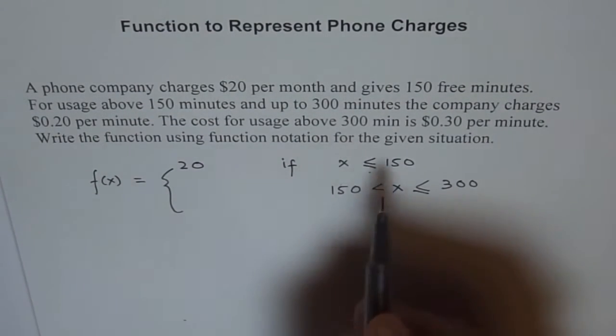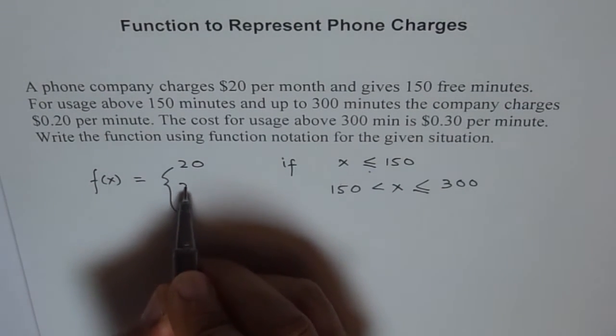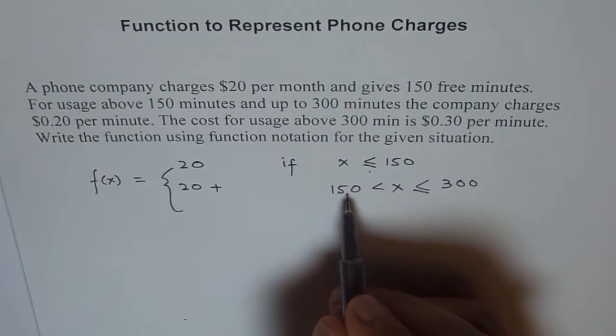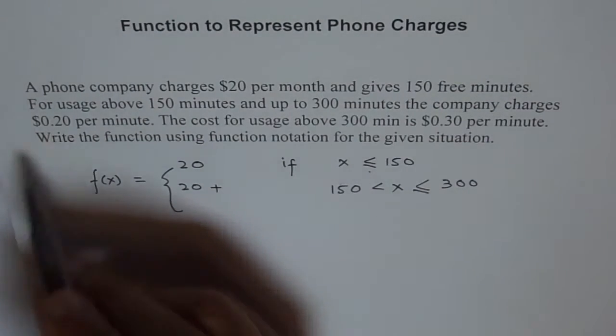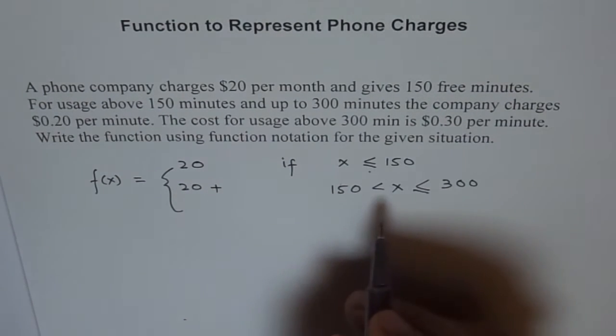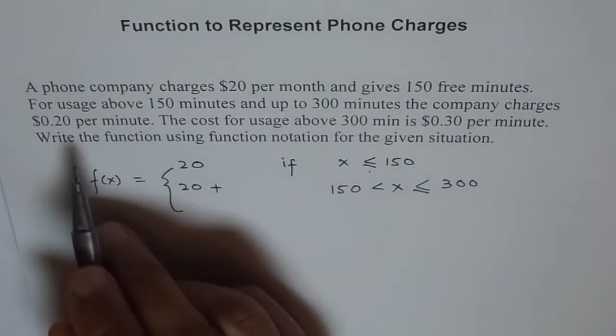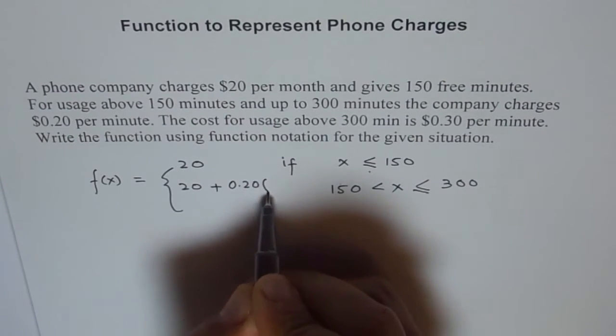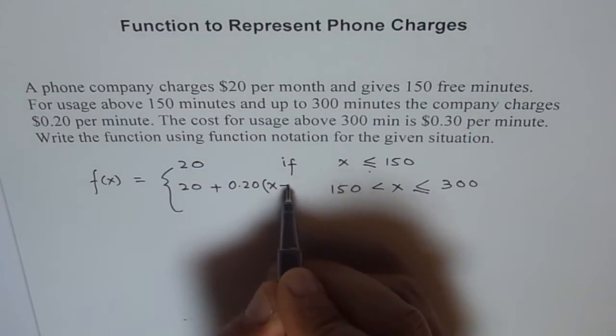So for 150, the company charged $20. In addition to that, if you go to 151 minutes, it will be 20 cents more. So if there are x minutes more than 150, then there will be 20 cents more. So we will write this as 20 cents times x minus 150.